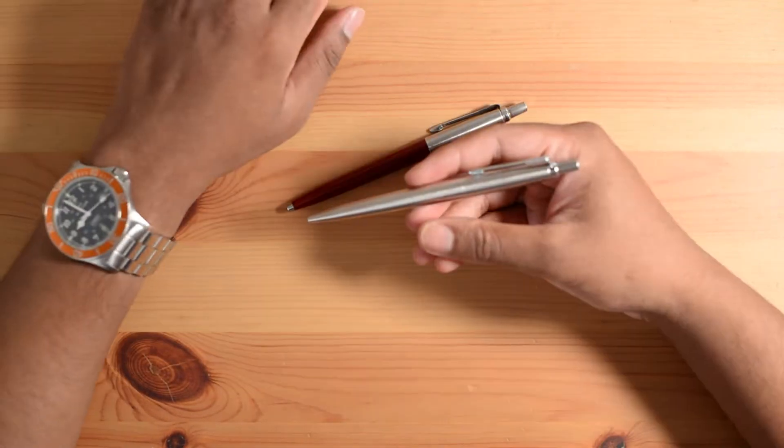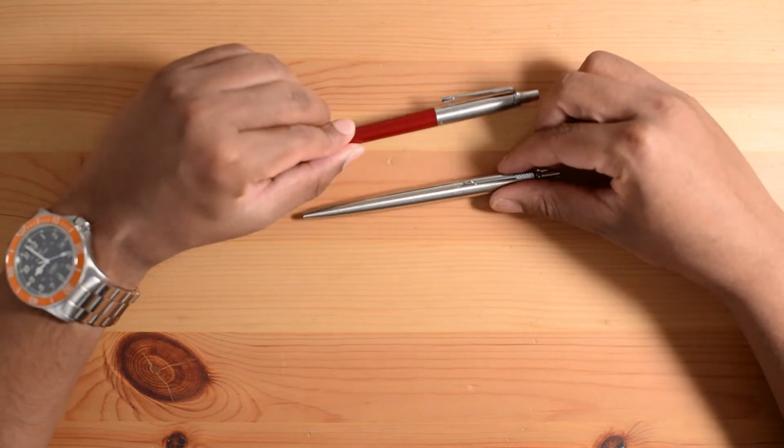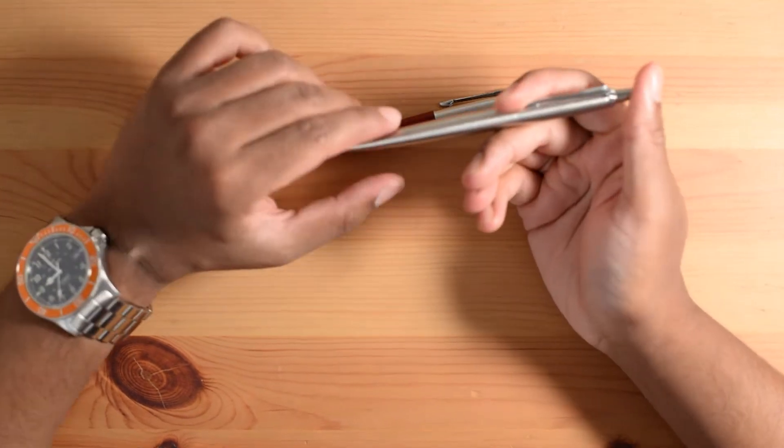The pen looks like it's in good shape still. The stainless steel version feels slightly heavier than the plastic version. Now let's click it for the first time and see if it still clicks.